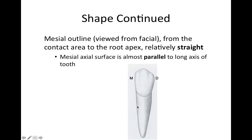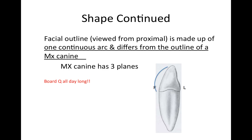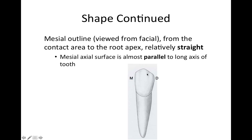On the mandibular canine there are two shape features to remember for exam questions: the facial outline is one continuous arc, and the mesial is parallel to the long axis of the root. You'll occasionally get questions that describe tooth anatomy and ask you to decide if the tooth is on the right or left side of the mouth — these features are a good way to determine that.